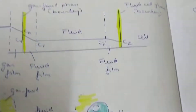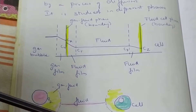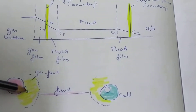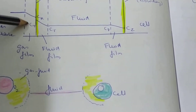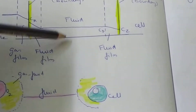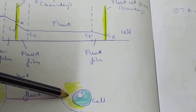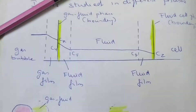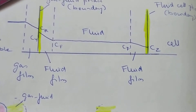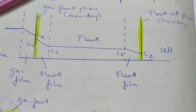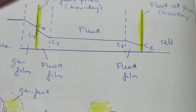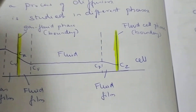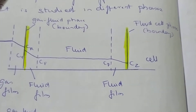Each cell — for example, this cell — I want to show them together. You can see the oxygen gas bubble here; oxygen is on the surface with both the gas film and fluid film together. This is purely the fluid, and this is the fluid near the cell boundary. We have to give some terminologies: cy, cr is the gas-fluid phase boundary, and cf is the fluid film — you can see cf on both sides — then comes cz.